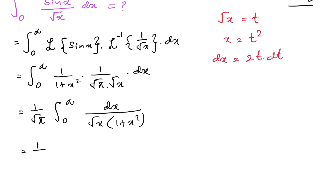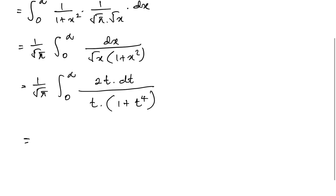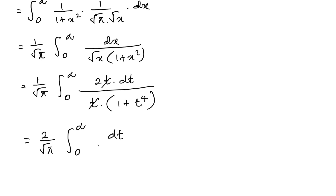Substituting in, we get 1 over square root of π times the integral from 0 to infinity of 2t dt over (t · (1 + t⁴)). The t's cancel, giving us 2 over square root of π times the integral from 0 to infinity of dt over (1 + t⁴).